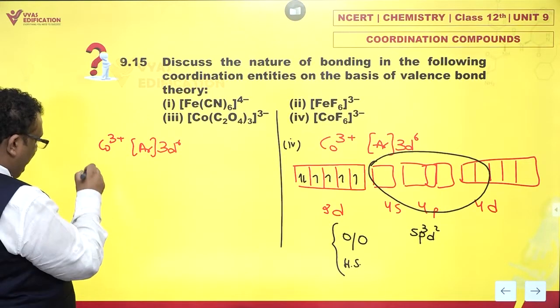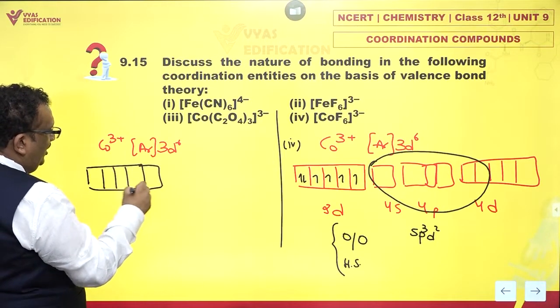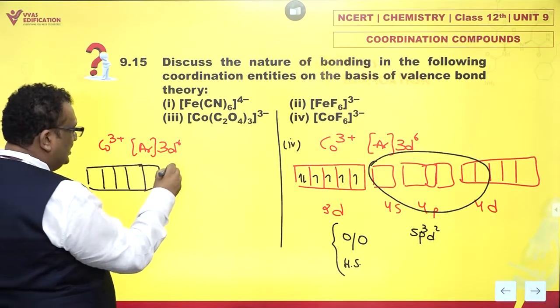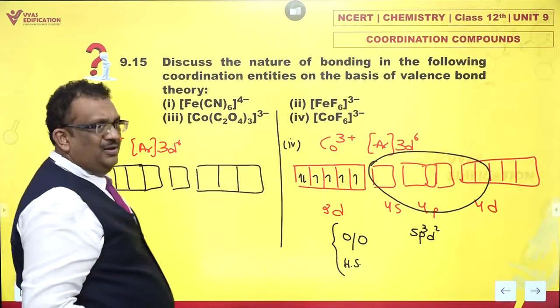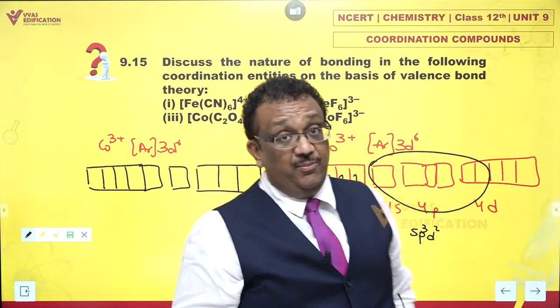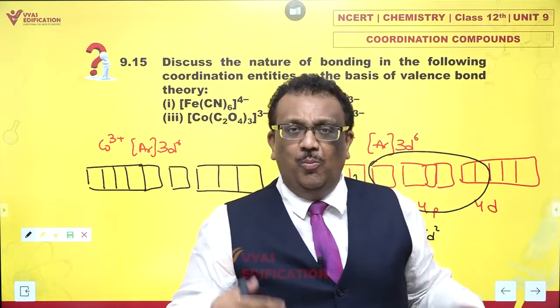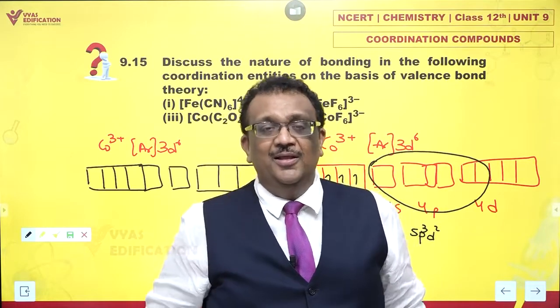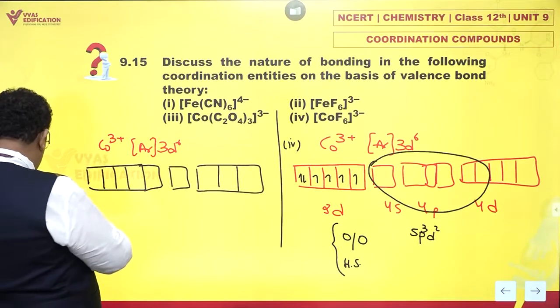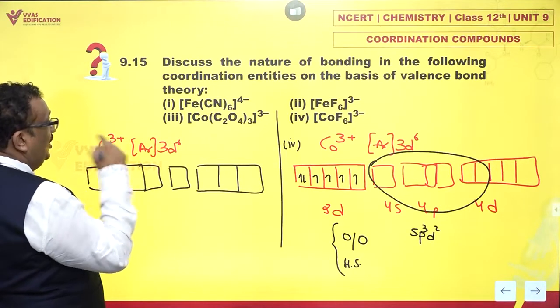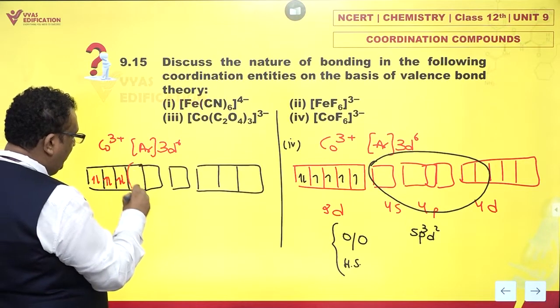What about this one? Now oxalate, honestly speaking, is not a very strong field ligand as such. Oxygen donors are not that great. But first of all, it is a chelating bidentate ligand. And secondly, cobaltic is so keen to undergo pairing that actually it becomes a low spin complex. So what happens? You have D6: 1, 2, 3, 4, 5, 6. They pair up.